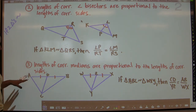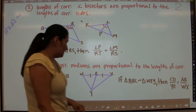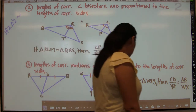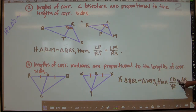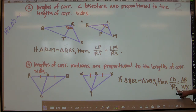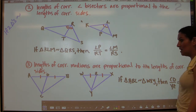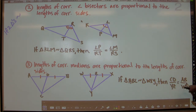So if triangle ABC is similar to triangle WXY, then the medians CD and YZ have a ratio equivalent to the ratio of any pair of corresponding sides — in this case AB to WX, but it could also be AC to WY, or BC to XY.